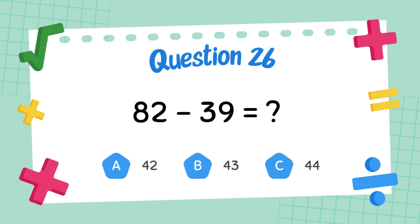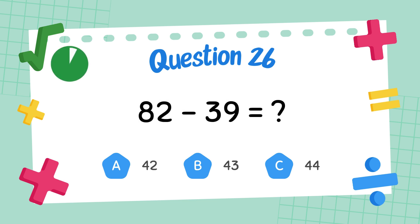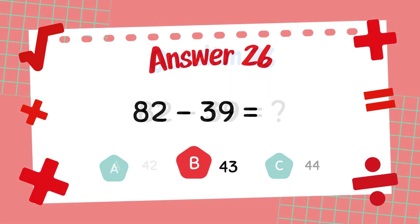What is eighty-two minus thirty-nine? The answer is forty-three.